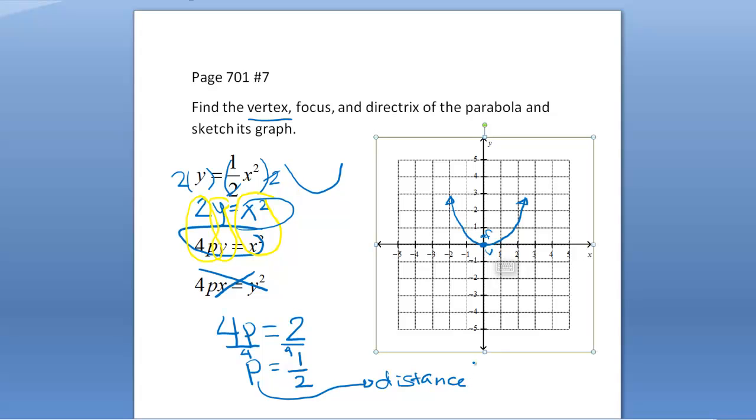It's our distance from our vertex to our p, and our vertex to our directrix. Since that's a half, we're going to go down a half and there he is right there. He's a dotted line because he's not really part of the graph.